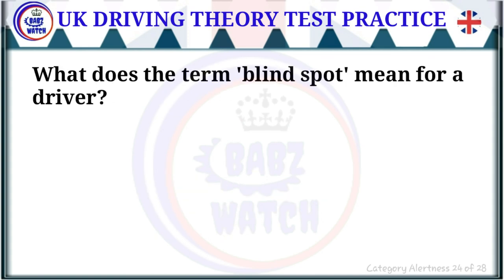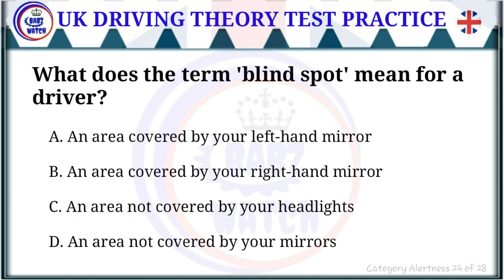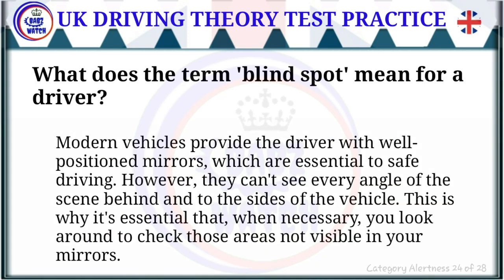Question 24 of 28: What does the term 'blind spot' mean for a driver? The correct answer is: an area not covered by your mirrors. Modern vehicles provide well-positioned mirrors which are essential to safe driving. However, mirrors can't see every angle of the scene behind and to the sides of the vehicle. That's why it's essential to look around and check those areas not visible in your mirrors.